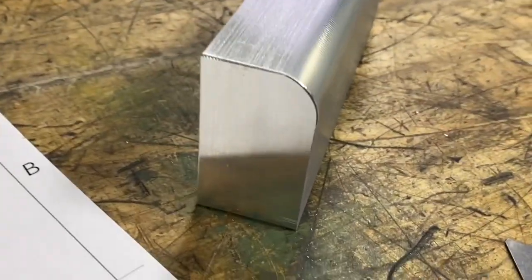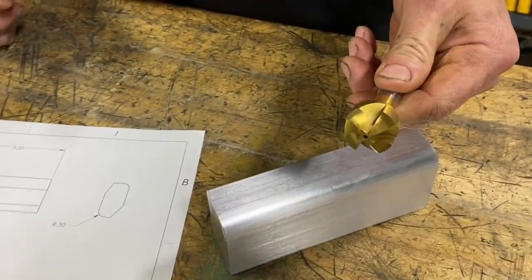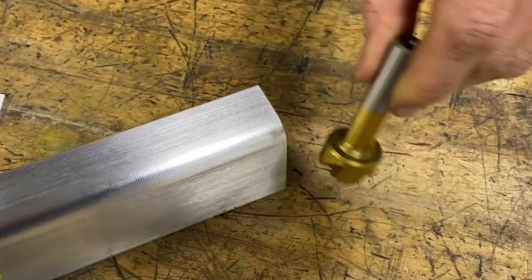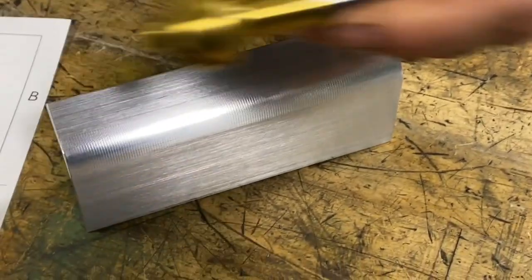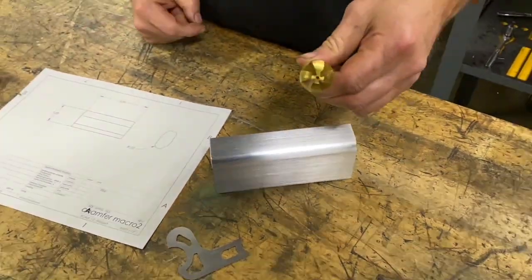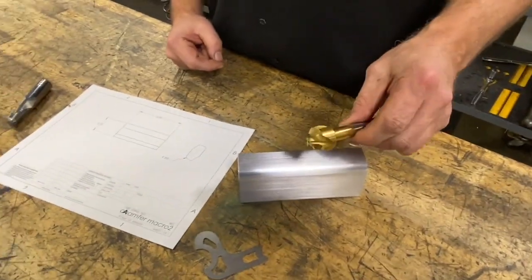Now traditionally this is usually the go-to tool for this operation, using a corner radius forming tool like this to cut down the edge of the part. These work really good, really efficient tools, fairly inexpensive, but we do have some limitations with these.